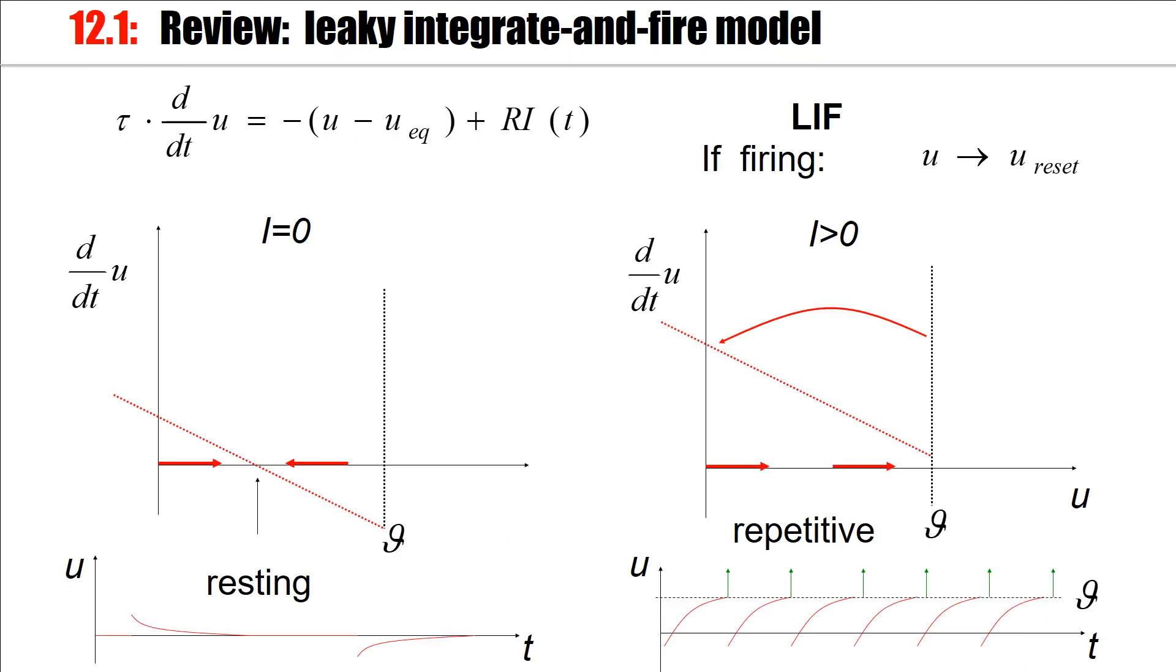Now, we have analyzed this in an earlier video by plotting the derivative, dU/dt, as a function of the voltage U. And then we see that if there is no input current, there's a crossing point, the resting potential, and then there's a flux or flow towards this resting potential, the equilibrium potential.